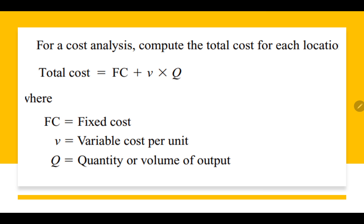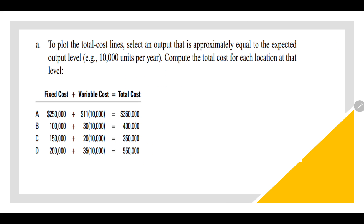Now, we have to do the plotting of the total cost lines. When we have to draw a line on a graph, we need two points — minimum two points are required to plot a line on the graph.